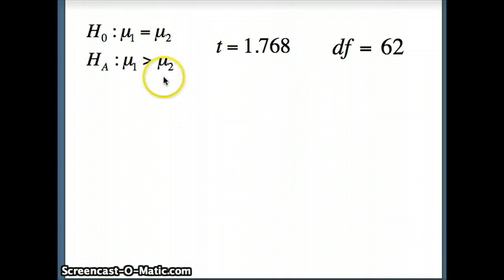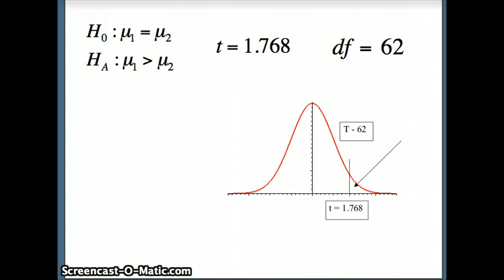So H₀ and Hₐ, our test statistic t and our degrees of freedom. Recognize this is a one-tailed test. So we're going to label our test statistic and shade to the right. T with 62 degrees of freedom, 1.768 is here. I want this area. That will be my p-value.